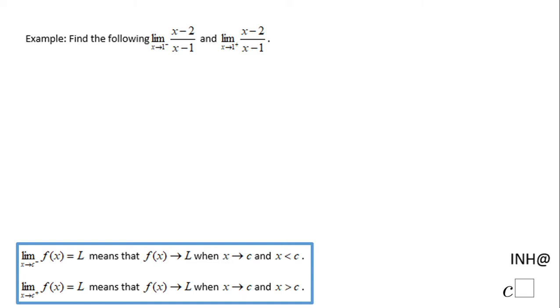Welcome back to Math Help at C Squared. In this example we need to find these two limits. I'm going to start with the first one: limit as x approaches 1 from the left of (x - 2) over (x - 1).